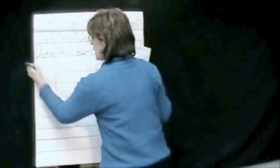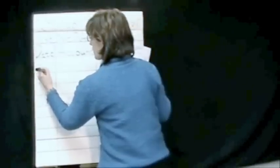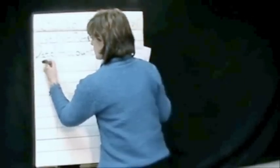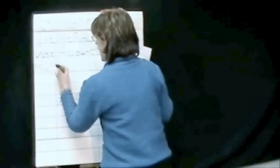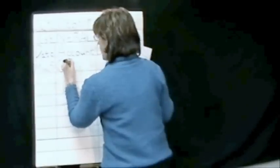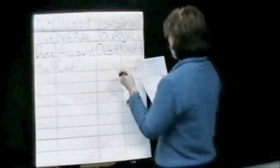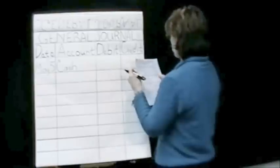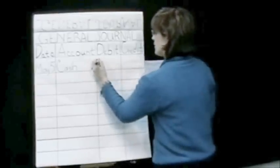The first thing I need over here is the date, which is May 1st. I'm going to debit cash. Debits go first, and we're going to be debiting cash for 50,000 times 20, which would be $1,000,000.